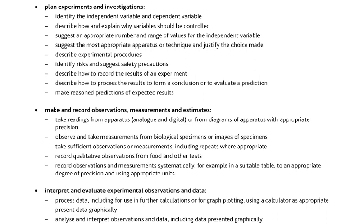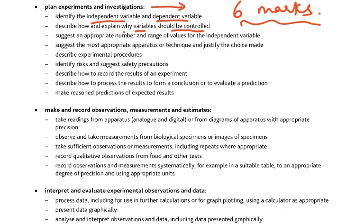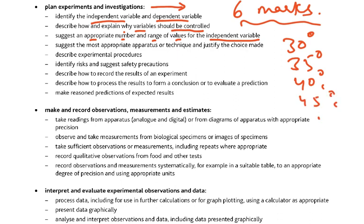Then: plan experiments and investigations — this is going to be a six-mark question, as you will see. Identify the independent variable and the dependent variable — very important. Describe how and explain why variables should be controlled. Suggest an appropriate number and range of values for the independent variable; for instance, if you're going to change temperature, you might take 30°C, 35°C, 40°C, 45°C and 50°C — because usual enzymes work within this range. Suggest the most appropriate apparatus or techniques and justify the choice. Describe experimental procedures. Identify risk and suggest safety precautions.